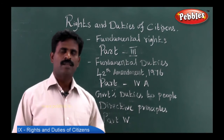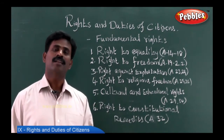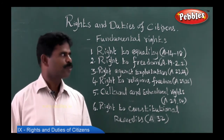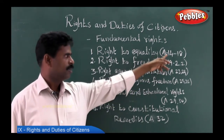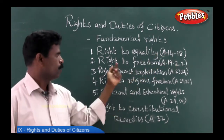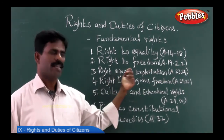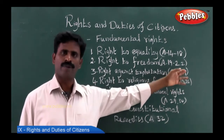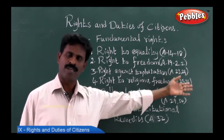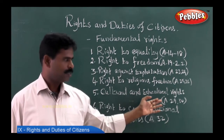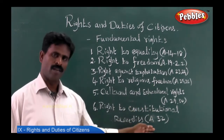Let's first take the fundamental rights. Part 3 of the Indian constitution enshrines certain fundamental rights for its citizens. Right to equality is in Article 14 to 18. Right to freedom is in Article 19 to 22. Right against exploitation is in Article 23 and 24. Right to religious freedom is in Article 25 and 26. Cultural and educational rights are in Article 29 and 30. Right to constitutional remedy is in Article 32.